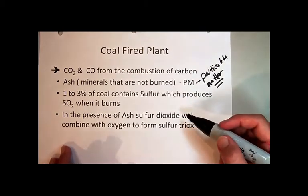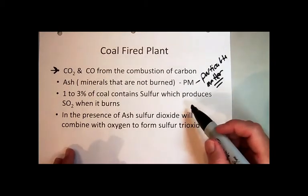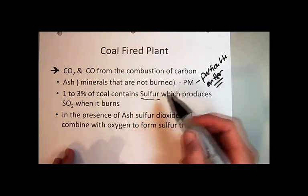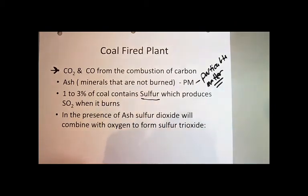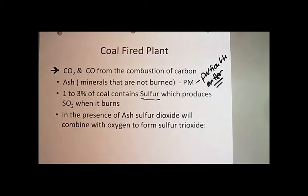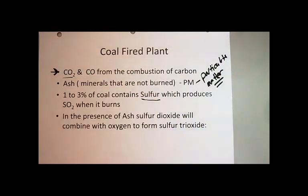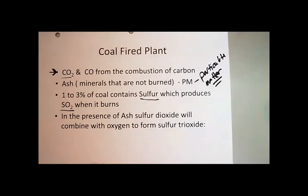Another problem with coal-fired power plants is that coal contains sulfur, typically ranging from one to three percent. Soft coal or brown coal has higher percentages of sulfur, while hard coal is cleaner-burning with less sulfur. When people talk about 'cleaning coal,' they mean removing the sulfur before burning it. This is because sulfur is another combustion product — just as carbon combines with oxygen to give carbon dioxide, sulfur combines with oxygen to give sulfur dioxide, SO₂.